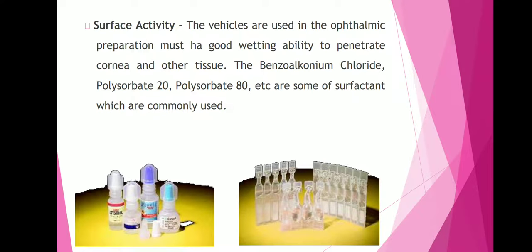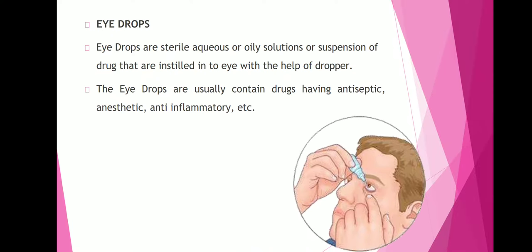Surface activity. The vehicles used in ophthalmic preparations must have good wetting ability to penetrate the cornea and other tissues. Benzalkonium chloride, polysorbate 20, and polysorbate 80 are some important surfactants which are commonly used.